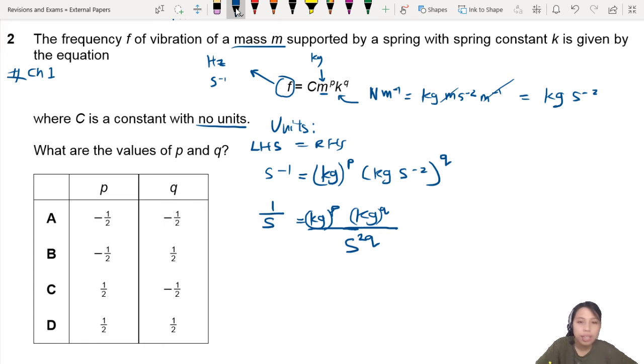So we notice that on the left-hand side, there is no kg, so somehow the kg cancel out. And we know this s here is power 1. So you see the power 1 equals to 2q. That means q equals to half. So this comes from looking at the s on both sides, comparing them both.